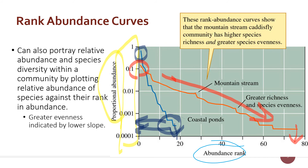These communities shown here are animal communities of caddisflies — insects that live at the bottom of streams and feed on material there. The mountain stream had 79 species, while the coastal ponds had only 18 species. Those 79 species are much more evenly distributed, resulting in a much shallower slope on the rank abundance curve. So you get a lot of information very quickly from this type of graph — both species richness and evenness are visible at a glance.